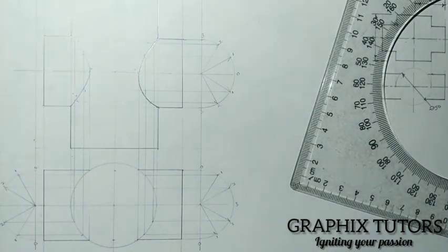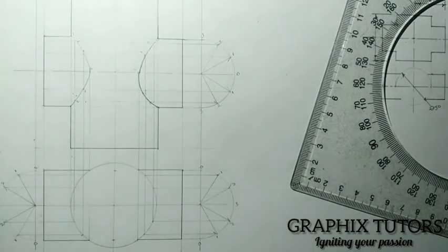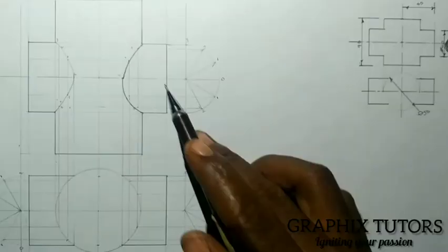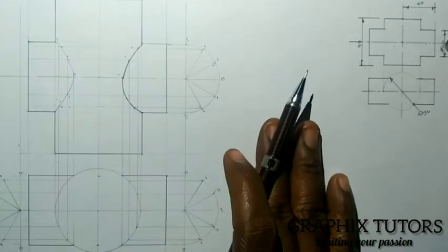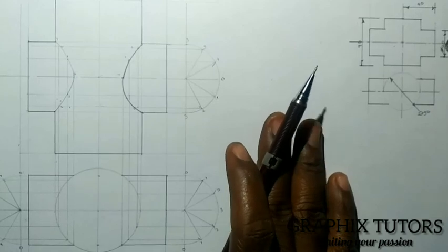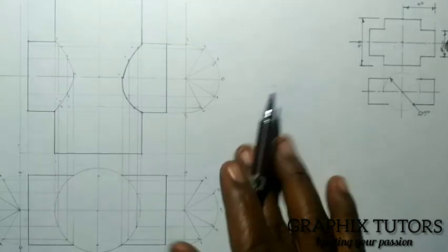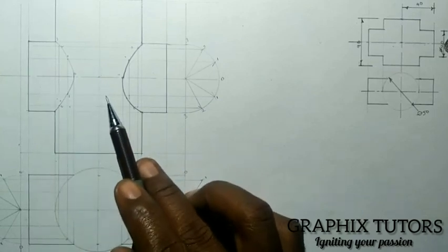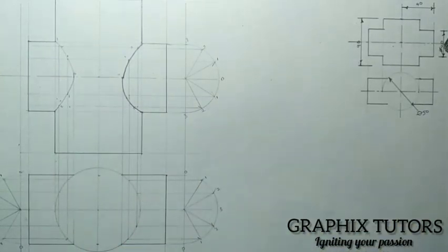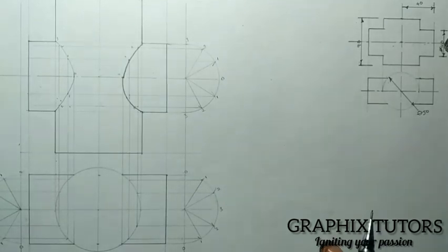This is the interpenetrating arc that we just concluded. This is how you draw three pipes merging together — Pipe A, Pipe B, Pipe C. Thanks for watching. If you've benefited from this video, don't forget to click on the subscribe button. Bye.